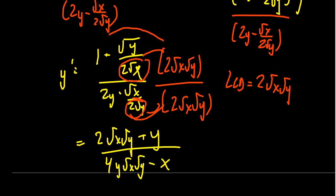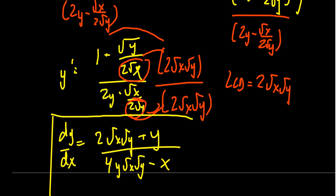So now we've cleaned up the fractions, and dy over dx equals 2·√x·√y plus y, all over 4y·√x·√y minus x. We could continue forward and rationalize the numerator and denominator, but there's no real algebraic benefit to doing that. So we leave it in this format and report this as the derivative of y with respect to x, computed using implicit differentiation.